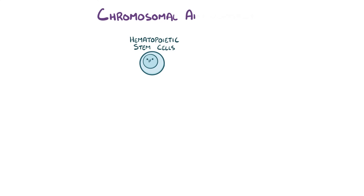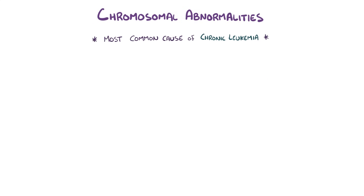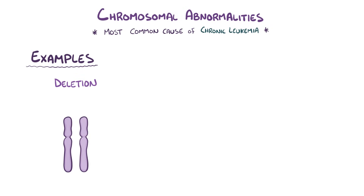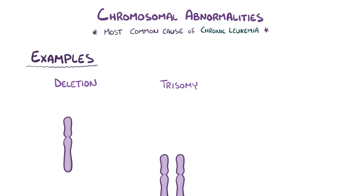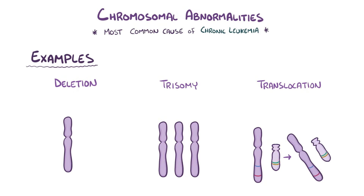A chromosomal abnormality in hematopoietic stem cells that are destined to become leukocytes is the most common cause of chronic leukemia. Some examples of abnormalities include a chromosomal deletion, where a part of a chromosome is missing, a trisomy, where there's one extra chromosome, and a translocation, where two chromosomes break and swap parts with each other.